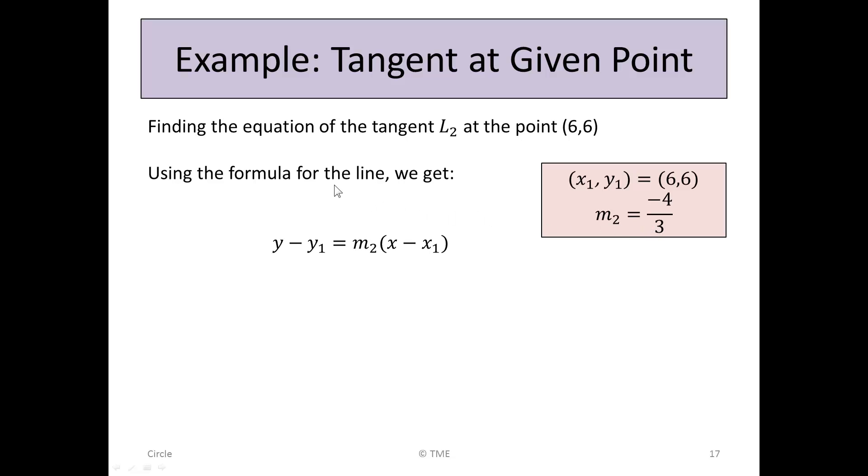So the formula from the tables for a line is y - y₁ = M₂(x - x₁). So substituting now for y - y₁, well, y₁ is 6, and x₁ is 6, and the M₂ is -4/3. So after this, it's arithmetic. We're going to multiply both sides by 3 to eliminate the 4/3. So 3(y - 6) = -4(x - 6).